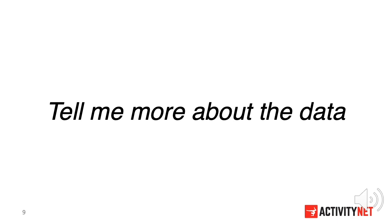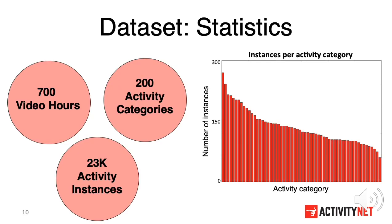Before talking about the challenge results, I would like to share some statistics of our dataset. The ActivityNet version 1.3 dataset contains 700 hours of video. Those videos record human activity from 200 activity categories, and we have a total of 23,000 activity instances in the dataset.